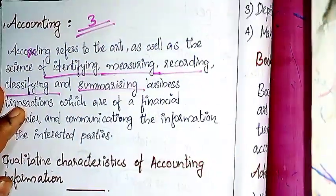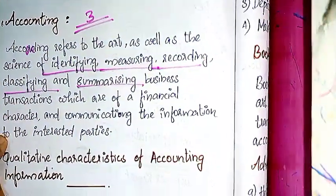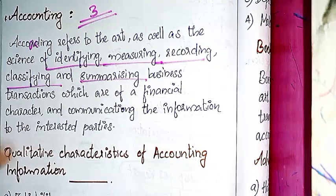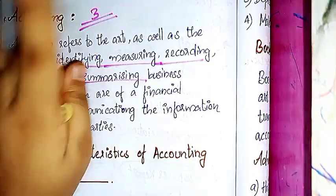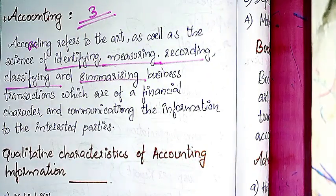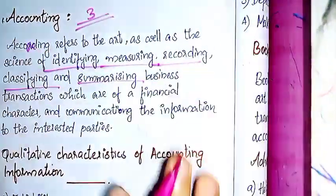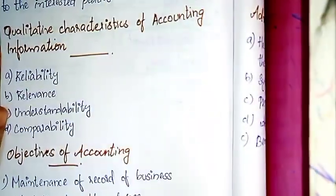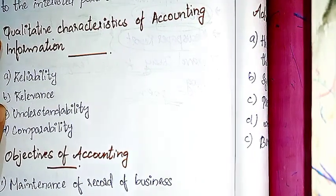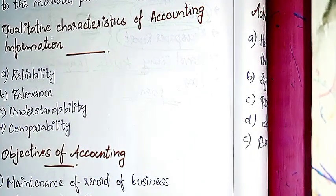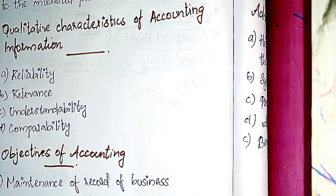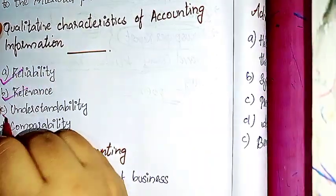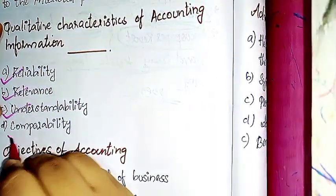I will ask you about accounting in detail. I am going to ask the question for three markers. The next topic is the Qualitative Characteristics of Accounting Information: Reliability, Relevance, Understandability, and Comparability.